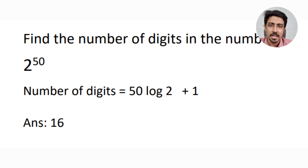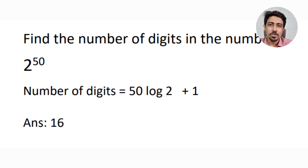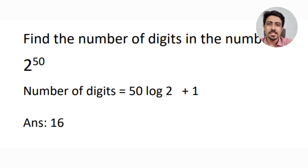You can use the scientific calculator provided to find any log value. Multiply it by 50, add 1, and ignore the decimal part. So 0.3 × 50 = 15-point-something, plus 1 gives 16 — the answer is 16 digits.